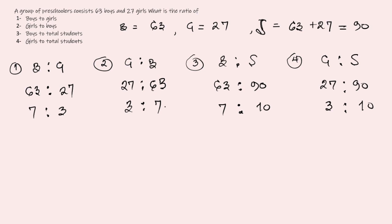Regardless of how you read it, this is a comparison of the quantities — girls to boys or whatever the ratio stands for. It's a comparison of the amount of boys we have for every amount of girls that are expressed in the ratios.